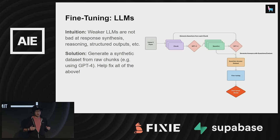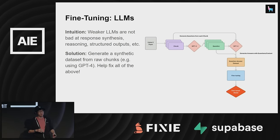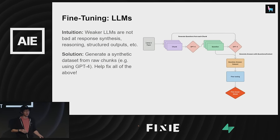The intuition specifically for RAG is that if you have a weaker LLM like GPT-3.5 Turbo or Llama 2 7B, these weaker LLMs are maybe a little worse at response synthesis, reasoning, and structured outputs compared to bigger models.